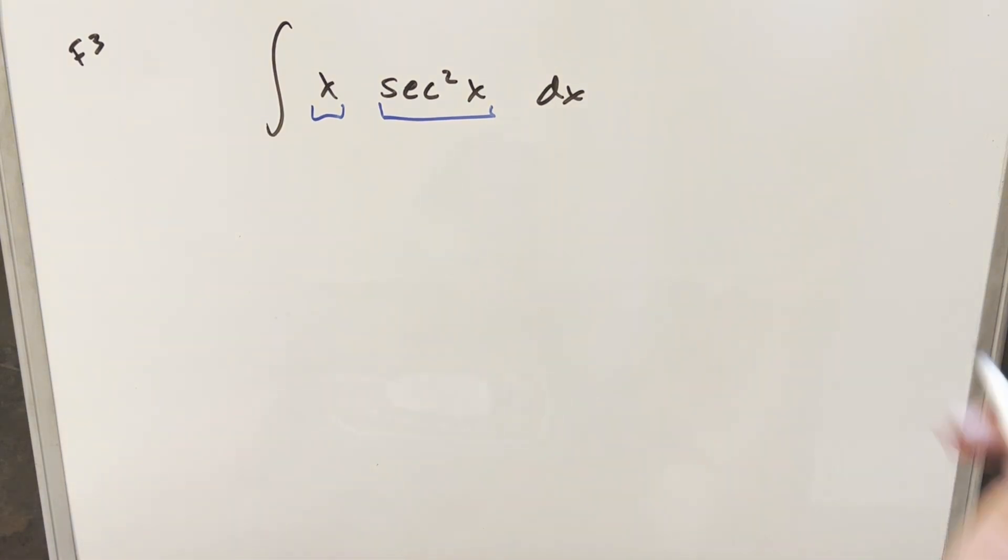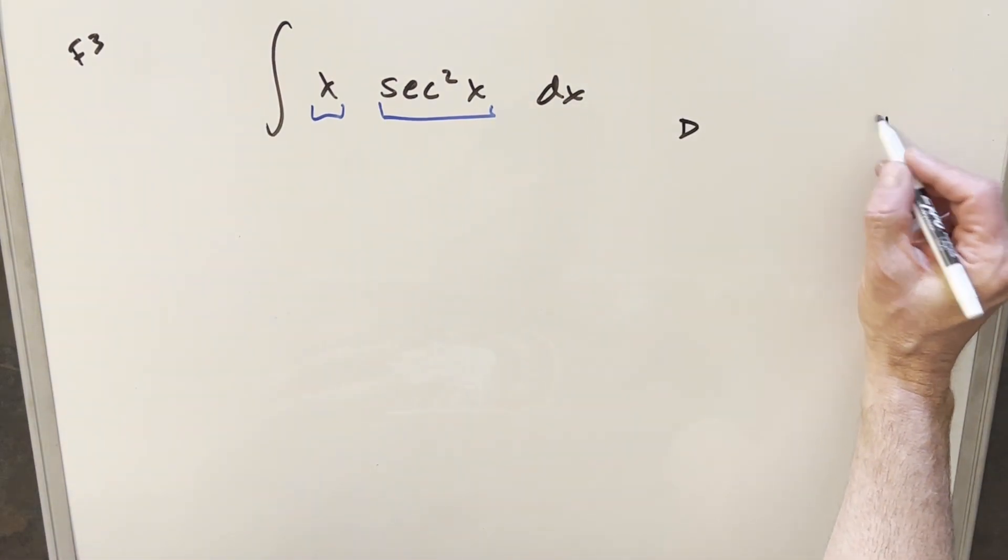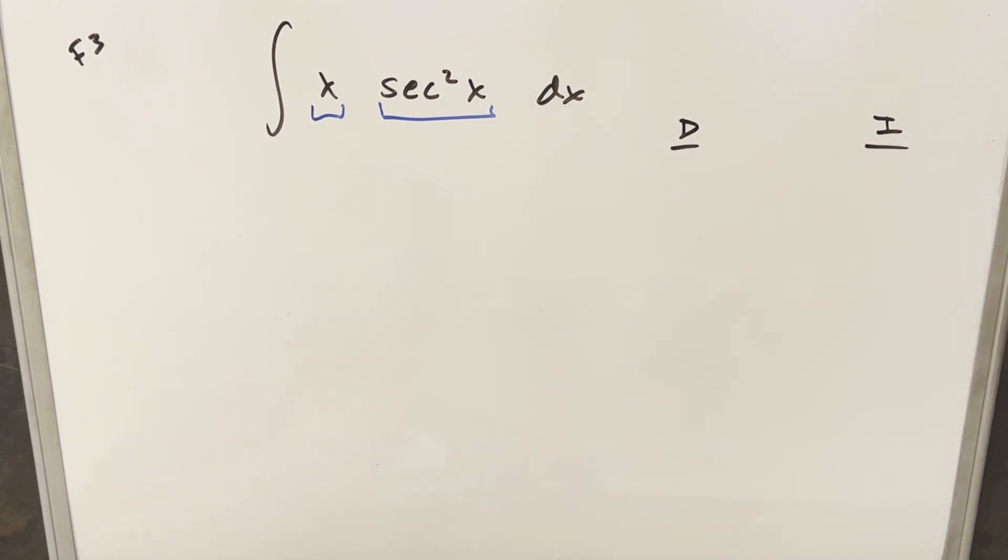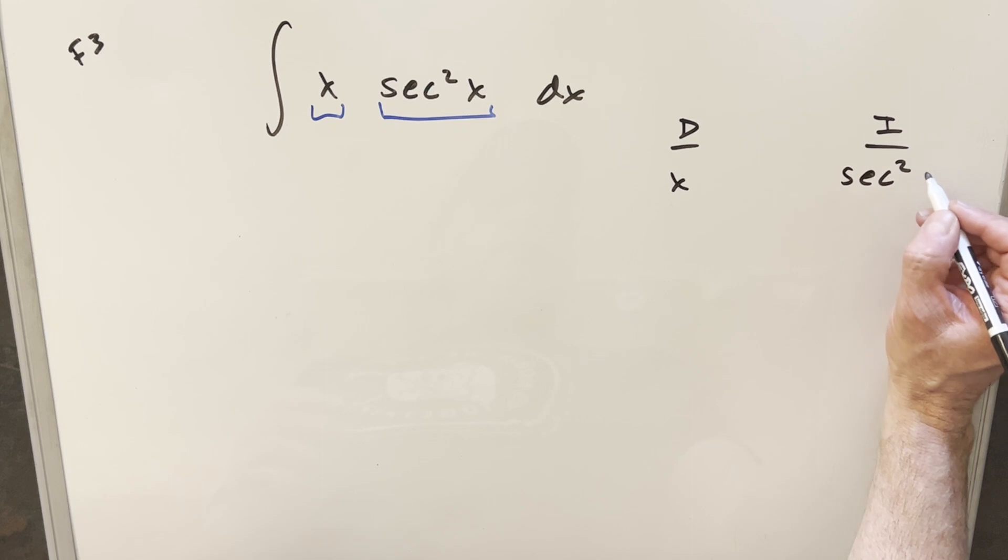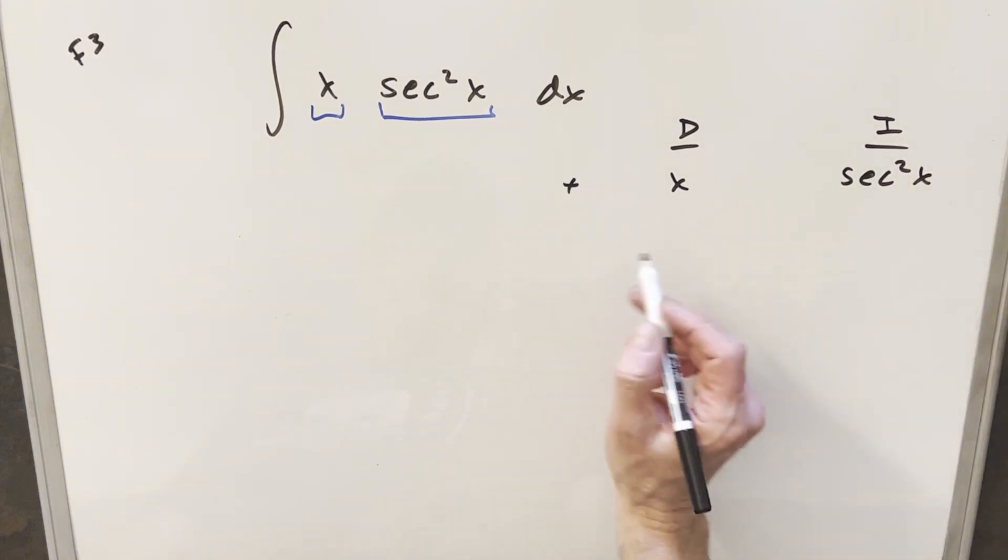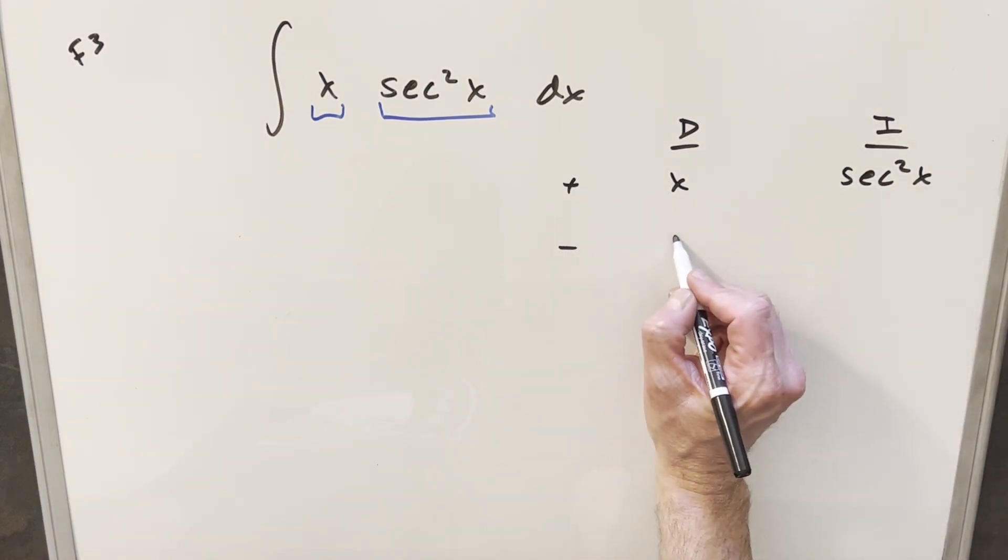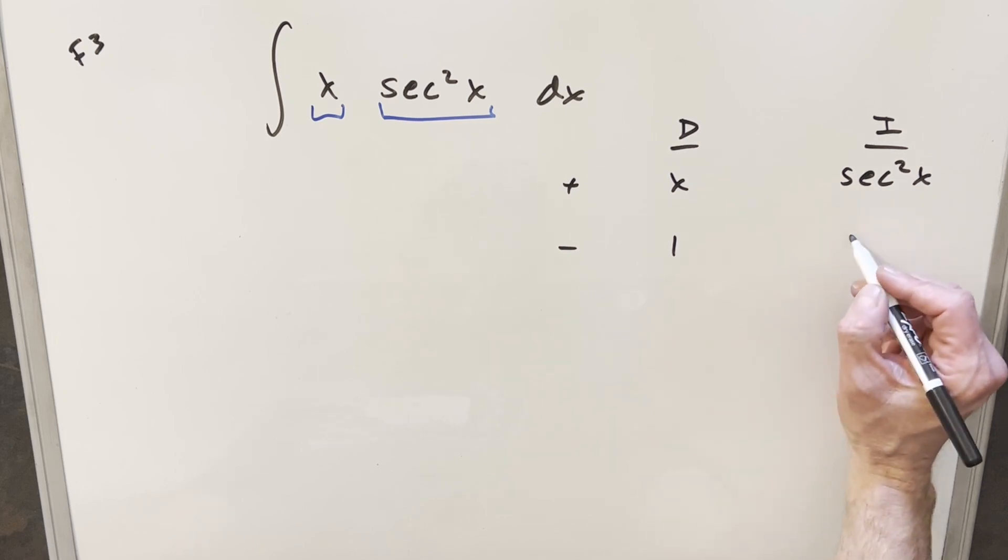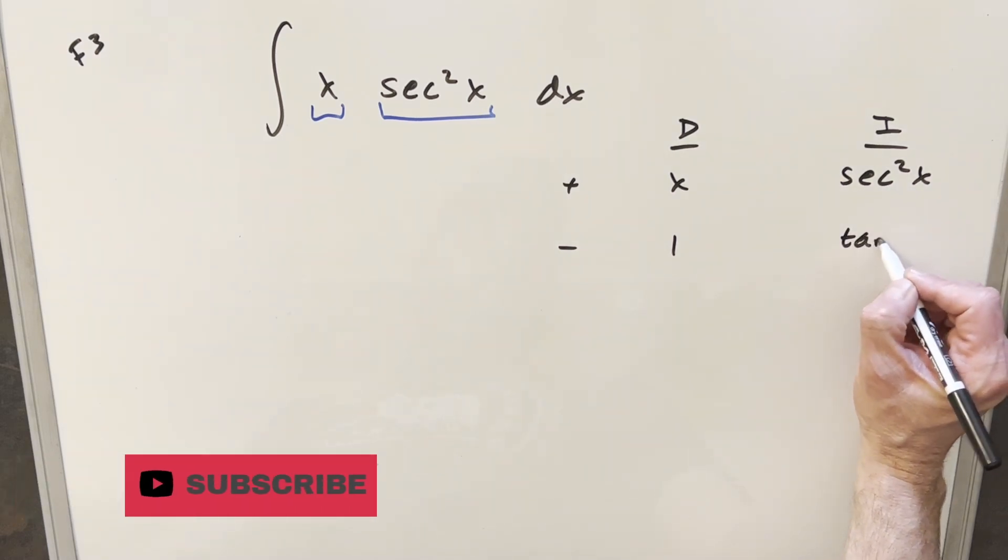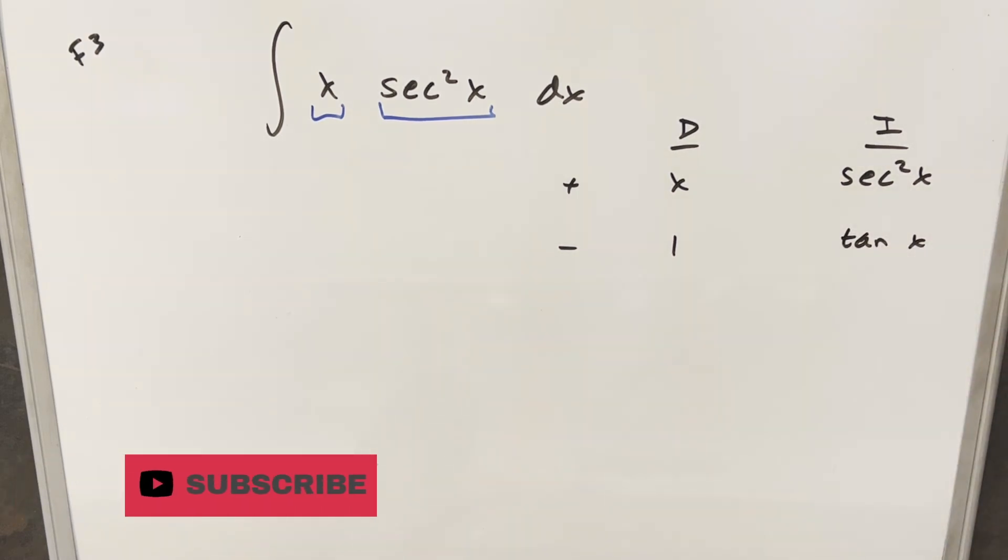So what I'll do is I'll set up my DI table for tabular integration over here to the right. We'll differentiate x and we'll just integrate secant squared x. So when I differentiate x, we just get one over here. Integral of secant squared x, this is going to be just tangent of x. And let's just do it one more time.